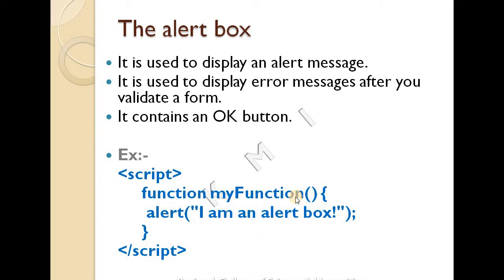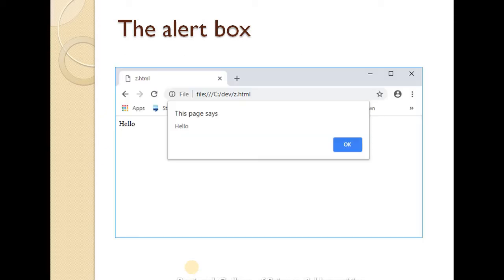This is the syntax for the alert box. Inside a script, you define a function — for example, 'myFunction' — and use alert('I am an alert box'). You can also use alert with a message like 'Regional College of Science and Humanities'. When triggered, an alert box appears with the message and an OK button.